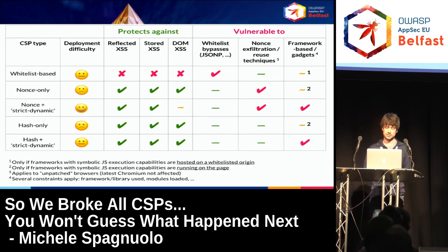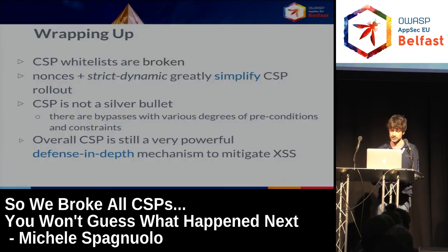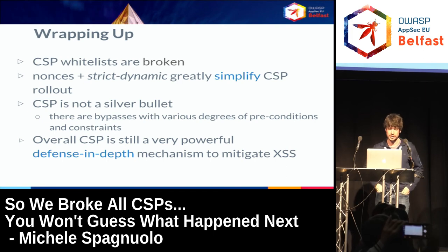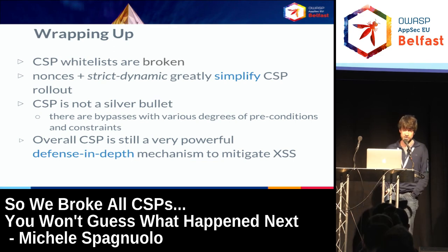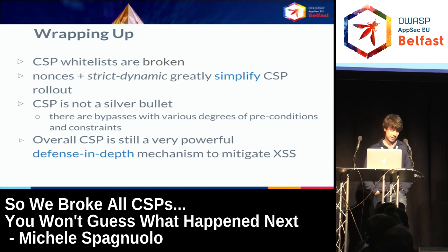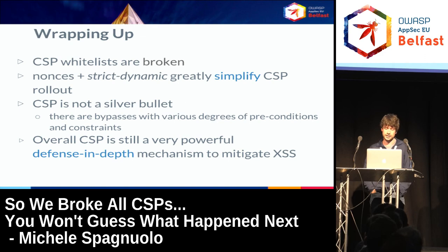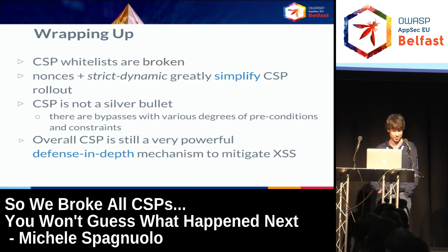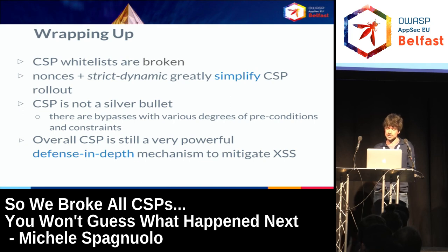Hash-only and hash-plus-strict-dynamic are also very interesting combinations. Hash plus strict-dynamic involves having one bootstrapping inline script with a known hash that dynamically loads other scripts — interesting because you don't even need a web server or active content to benefit from strict-dynamic. In conclusion: CSP whitelists are broken, nonce plus strict-dynamic greatly simplifies CSP rollout, and CSP is not a silver bullet — it is a defense-in-depth mechanism. The bypasses are becoming increasingly difficult and technically complex, which means we're doing a good job.